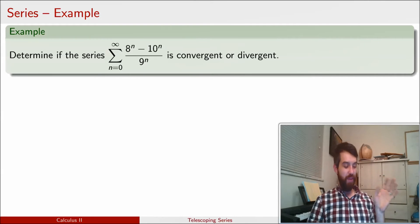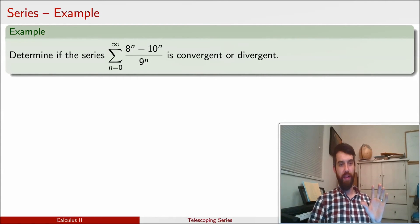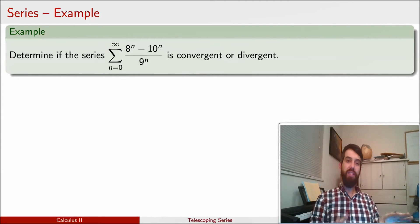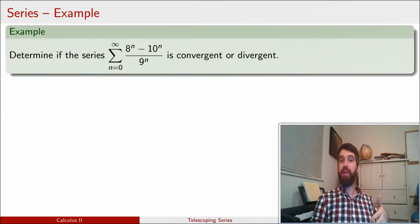So, in this example, I have a difference of two things. I've got an 8 to the N minus a 10 to the N on the top. So what I'm going to do is I'm going to take the two different pieces. I'm going to analyze them separately. I'm going to see whether the two different pieces individually, whether they're converging or whether they're diverging. And then depending on those answers, I may or may not be able to use one of those rules.